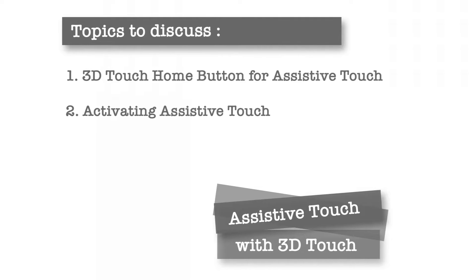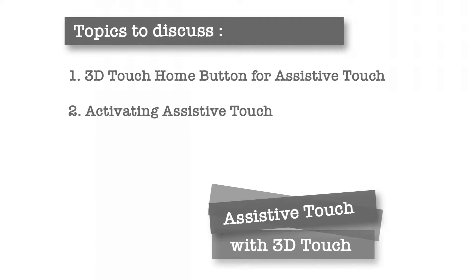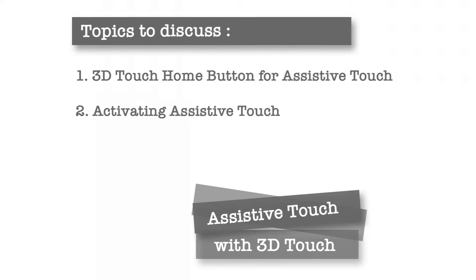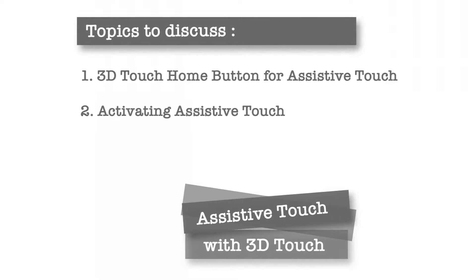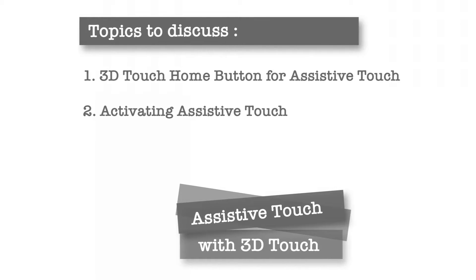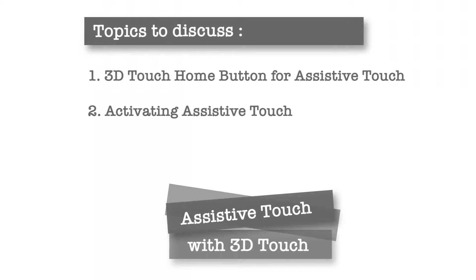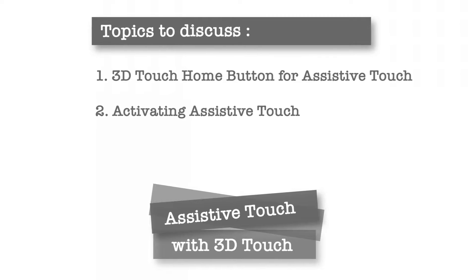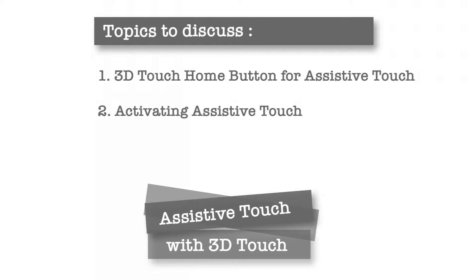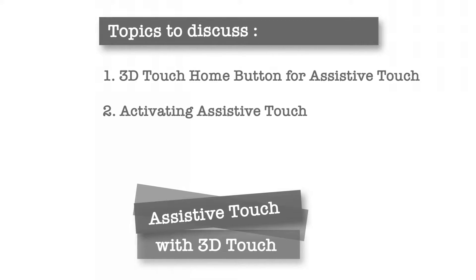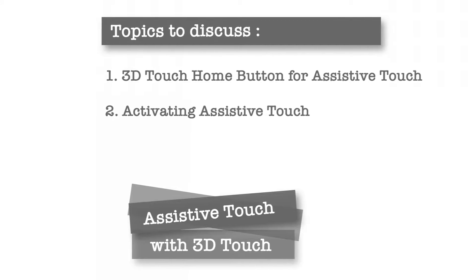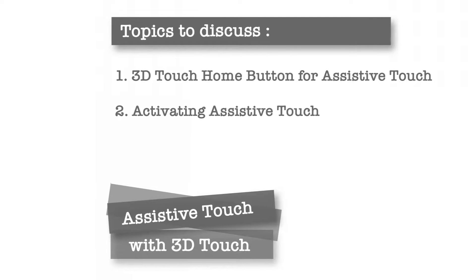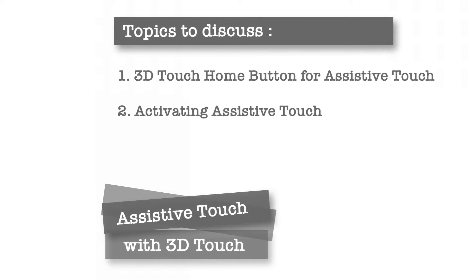Hello friends, welcome back to Apple Friendly, video number 35. In my previous video, I showed you some new features of WhatsApp, and today I am going to show you how to assign the Home button to Assistive Touch using the 3D Touch feature on your iPhone. This video is for 3D Touch iPhone owners and I believe they would love this feature. I personally use this feature more than 100 times a day on my iPhone 6S Plus.